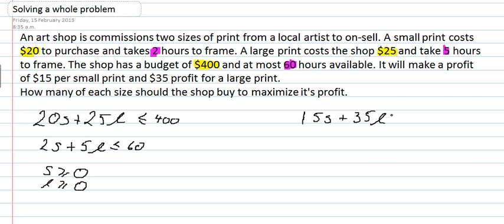So in about two and a half minutes, we've managed to write down the constraints. I'm going to highlight each bit and put a marker beside each constraint so you can see where they came from. That's the first bit of the problem — in the next video, we'll draw the graph and find the vertices. That's solving the whole problem, part 1.